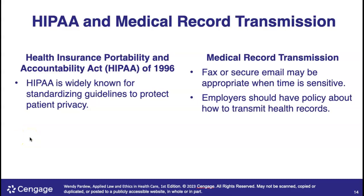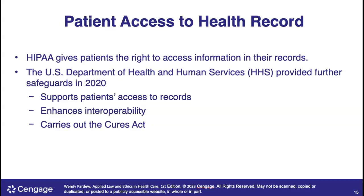HIPAA was put in place back in 1996 and is widely known for standardizing guidelines to protect privacy. When we transmit medical records, it has to be over a secure platform. Employees always have a policy about this — it's got to be over secure email or fax. Within our organization, emails must be within network; you don't want to send anything outside of network because it's not secure. If you must send outside — to a payer or insurance company — you have to make sure that email is encrypted and secured per HIPAA guidelines.